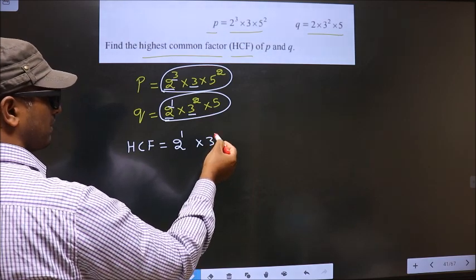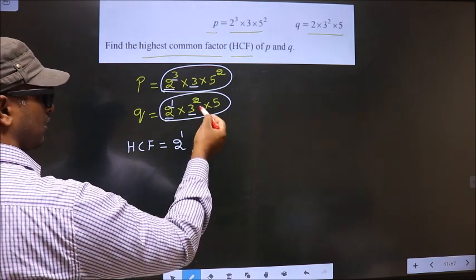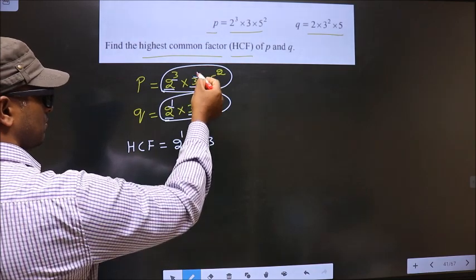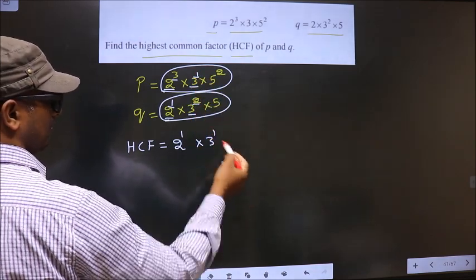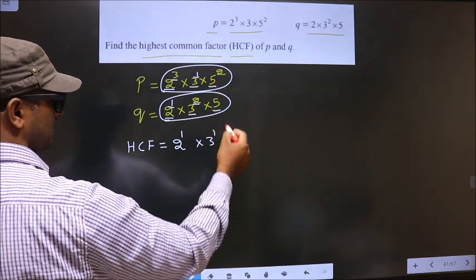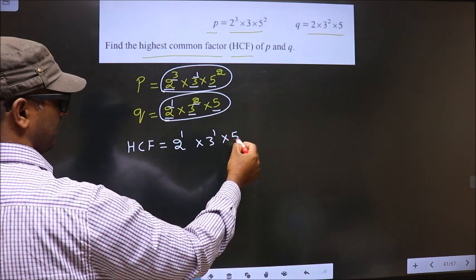Now what power will this get? It will get the smaller of both powers. So here power is 1, here it is 2. Smaller is 1. So here it will get 1. Next number is 5. Do we have 5 here? Yes. So here also you write 5.